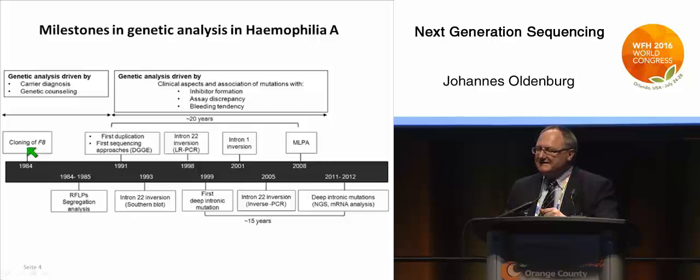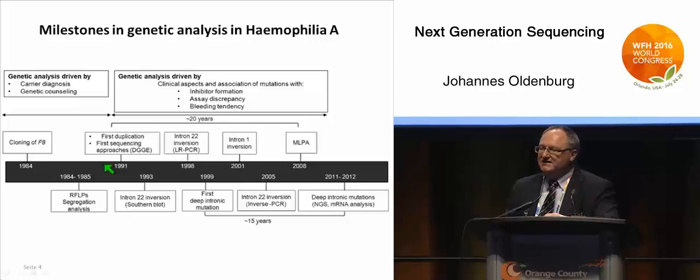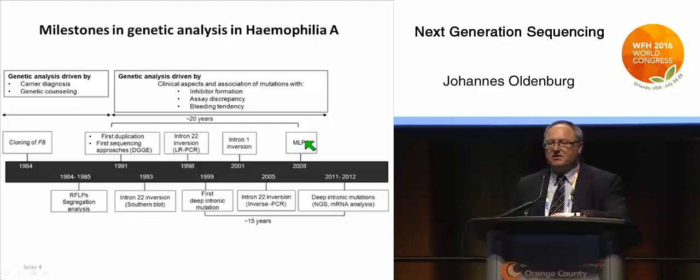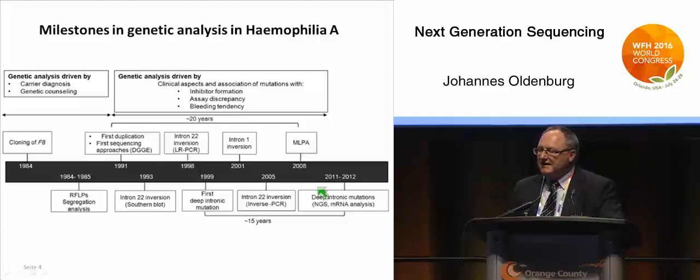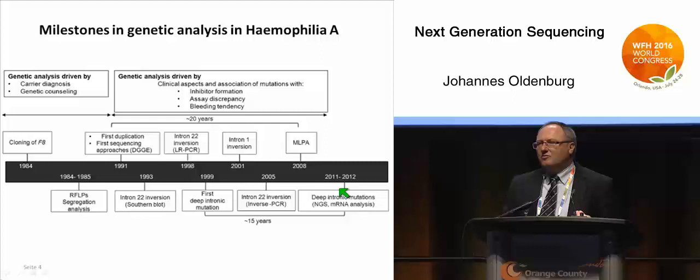The coding sequence of factor VIII was discovered in 1984. Then the era of RFLP analysis came. In the beginning of the 1990s, we had screening techniques to localize mutations. For the factor VIII gene, we had the intron 22 and intron 1 inversions. More recently, duplications became detectable by multi-linkage probe analysis. And now, very recently, next generation sequencing is applied to hemophilia for deep intronic mutations, so that almost all mutations in hemophilia patients can be identified.